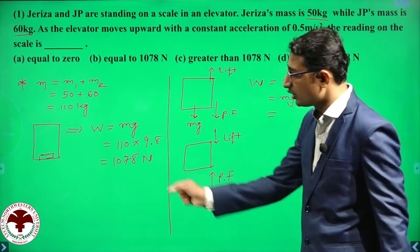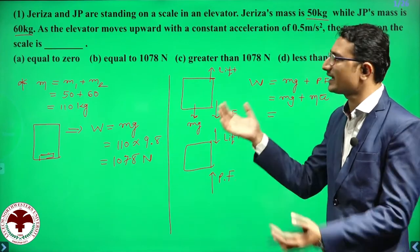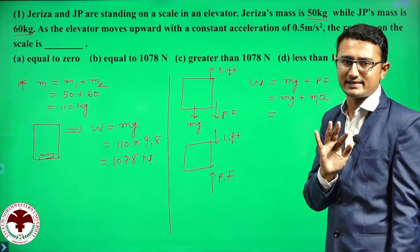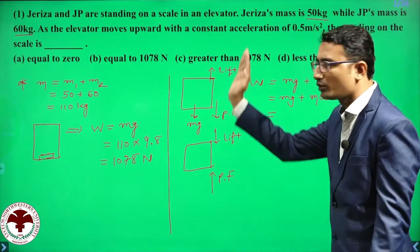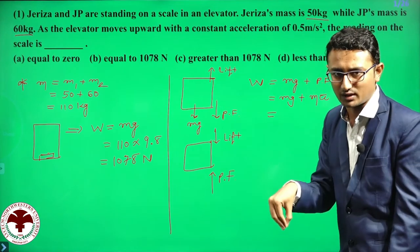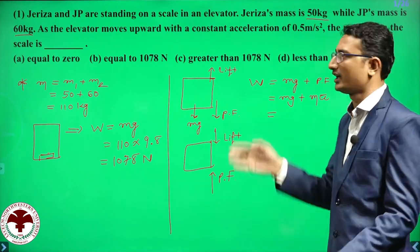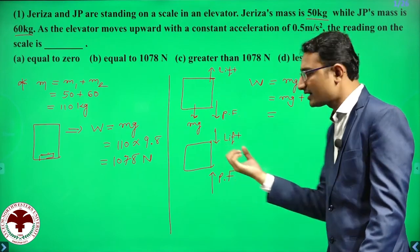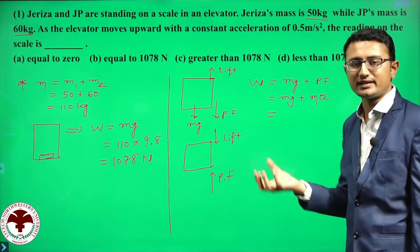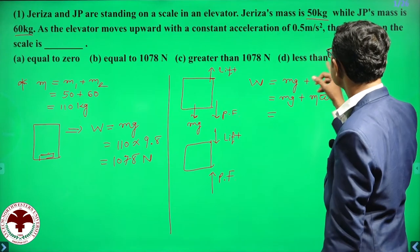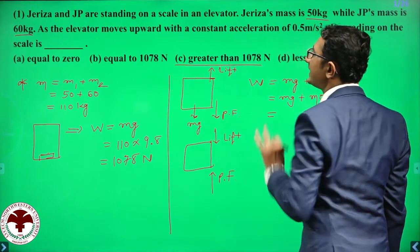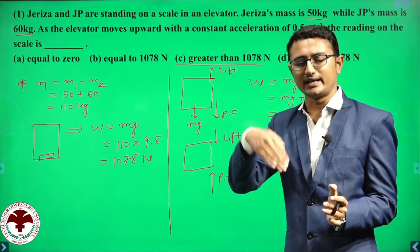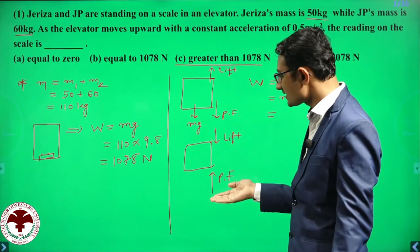In this question, the lift is moving upward, so the pseudo force is adding to mg. The net force becomes more than 1078 Newton — so the right answer is greater than 1078 Newton. If instead the elevator moved downward, pseudo force would be upward, subtracting from mg, and the total weight would decrease to less than 1078 Newton.